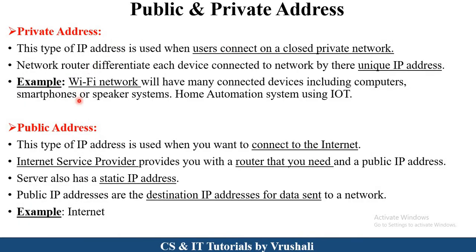In computer networks there are two terms: private address and public address. The best example of a private address is a Wi-Fi network — in a particular institute or home, multiple computers, mobiles, speakers, and other devices are connected to one Wi-Fi. This is called a private address, and each device has its own unique IP address. The best example of a public address is the internet — an internet service provider gives you a particular public IP address or router to connect systems to the internet. So when you connect to the internet, a public address is used.